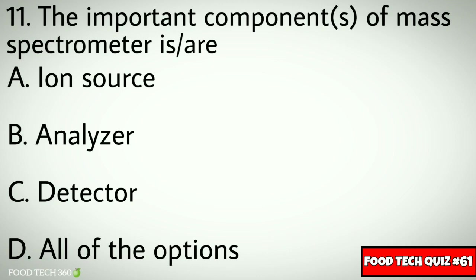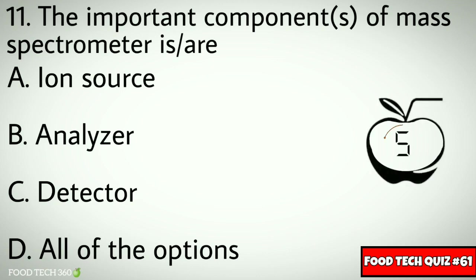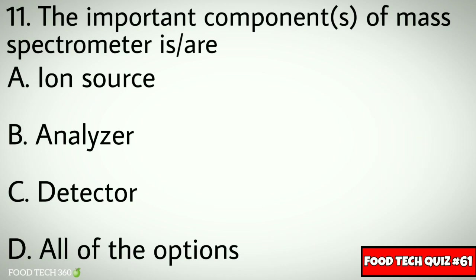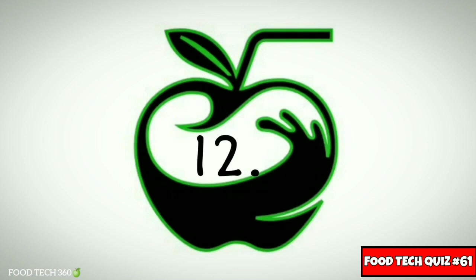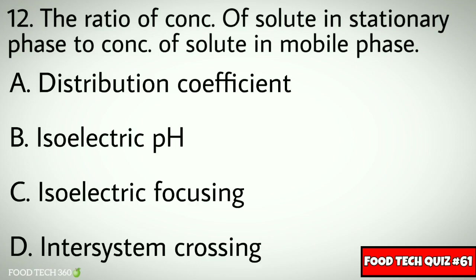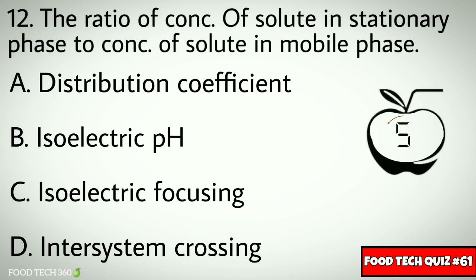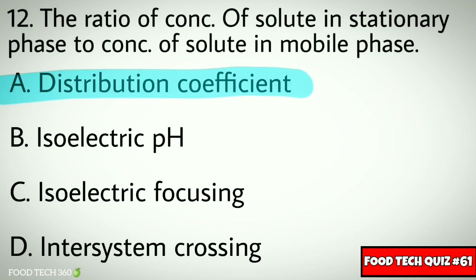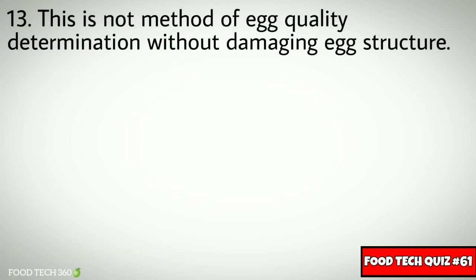Correct answer: d) all of the options. Question number twelve: the ratio of concentration of solute in stationary phase to the concentration of solute in mobile phase. Options: a) distribution coefficient, b) isoelectric pH, c) isoelectric focusing, d) intersystem crossing. Correct answer: a) distribution coefficient.